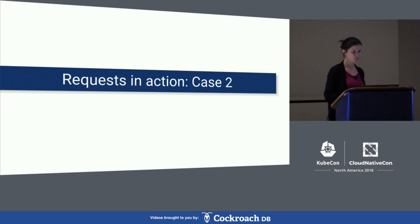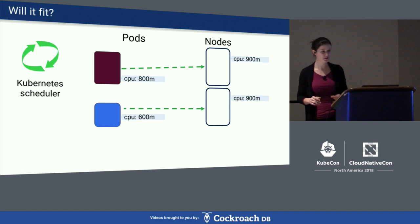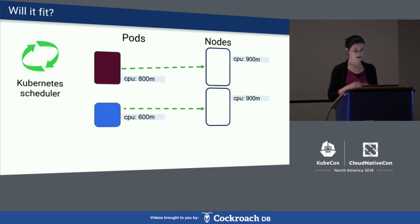Now let's look at another example that includes cluster autoscaler to see how it also depends on your resource requests being set correctly. This situation is similar, but the first pod is a bit bigger — it requests almost a whole node: 800 milli CPUs. The other one is the same as before. Scheduling is easy: one pod goes on one node, another on the second one.